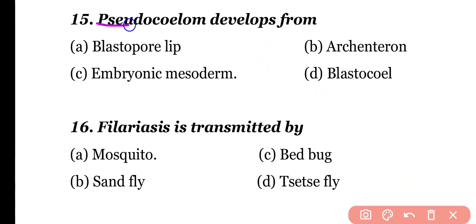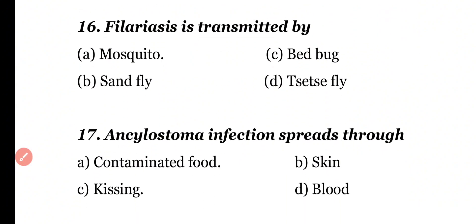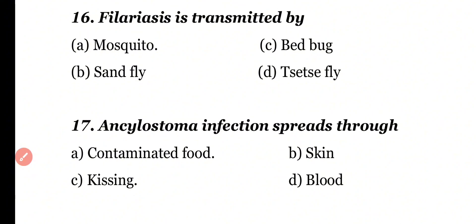Question 15: Pseudocoelom develops from blastopore lip, archenteron, embryonic mesoderm, or blastocoel. Correct answer is option D. Pseudocoelom develops from the embryonic blastocoel.